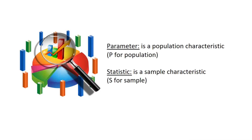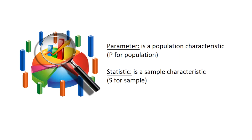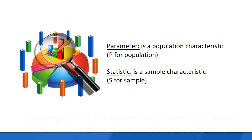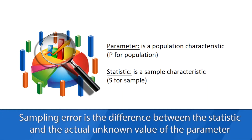More definitions. We use the word parameter — sometimes we say population parameter, P for population — and that's a characteristic of the entire population. A statistic comes from the sample; sometimes it's called a sample statistic, S for sample. Statistics can vary from sample to sample, but the parameter, since it belongs to the entire population, doesn't vary. So the statistic depends on how good our sample is.